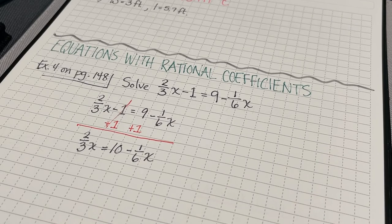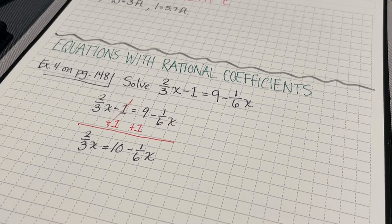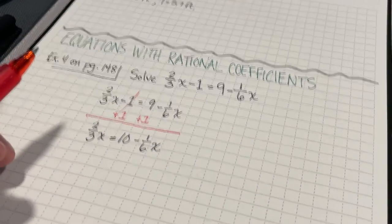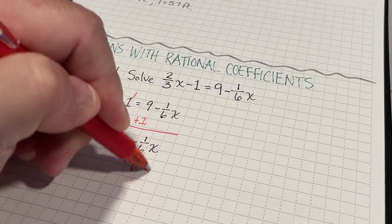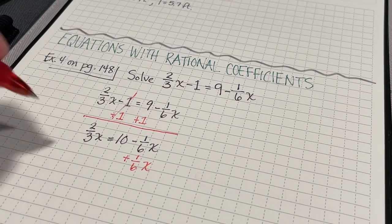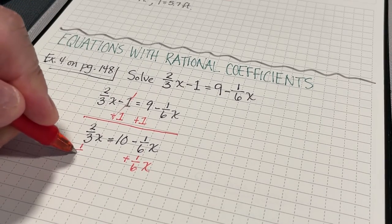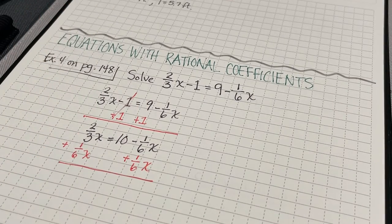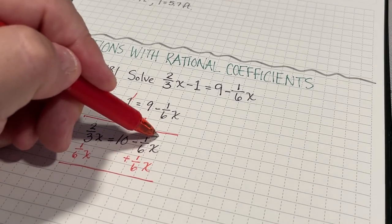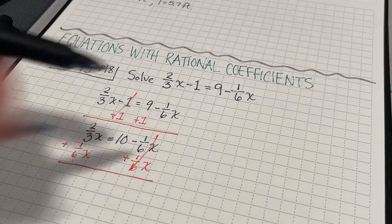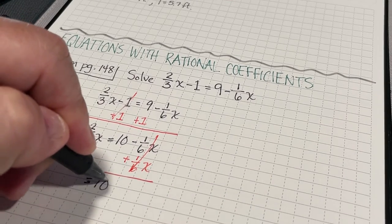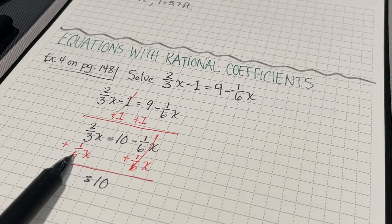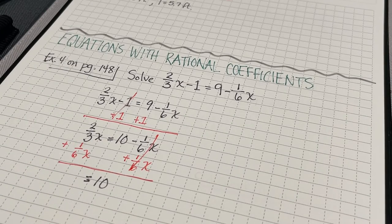Alright, now I've got to deal with the terms with my variables. So, I'm going to add 1/6x to both sides. Now, I know that this is going to just be zero. So, on the right side of my equation, I'm just going to have 10. But over here, I've got to deal with these two fractions that don't have common denominators.